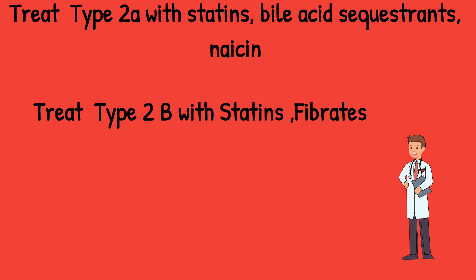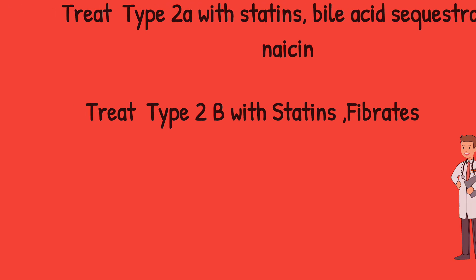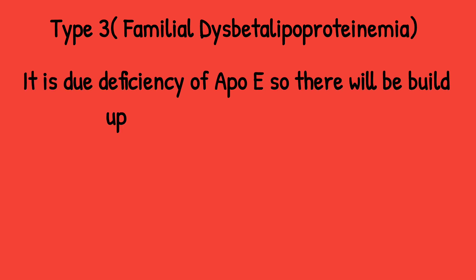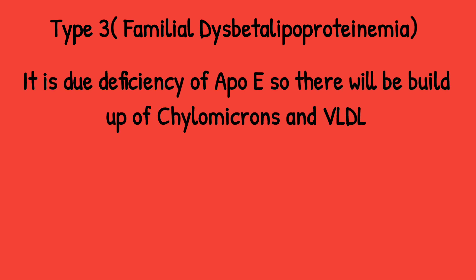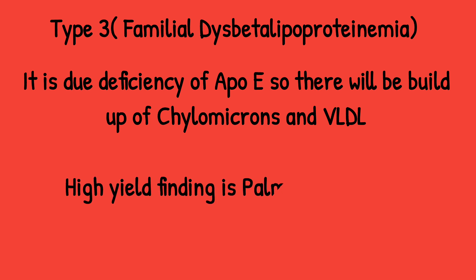Type 2b is treated with statins and fibrates, because VLDL contains triglycerides, so fibrates are needed for TGs. Type 3 is called familial dysbetalipoproteinemia. It is due to apoE deficiency, so there will be a buildup of chylomicrons and VLDL. The high-yield finding is palmar xanthoma — remember that.